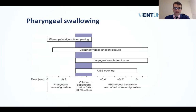Without going into depth on pharyngeal swallowing: essentially it consists of the glossopalatal junction opening and the velopharyngeal junction closing to prevent nasal regurgitation of food. The laryngeal vestibule also closes to prevent aspiration of food into the airway. The opening of the upper esophageal sphincter allows passage from the hypopharynx into the esophagus.